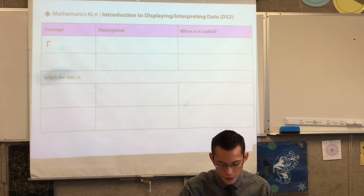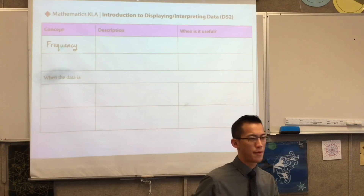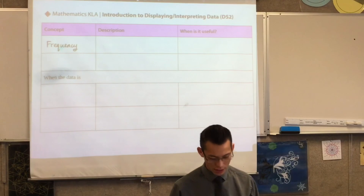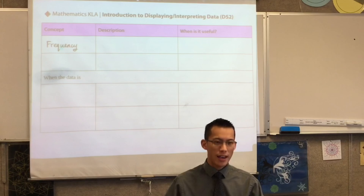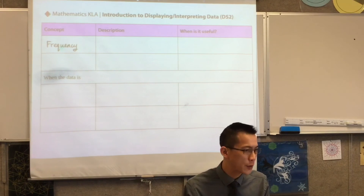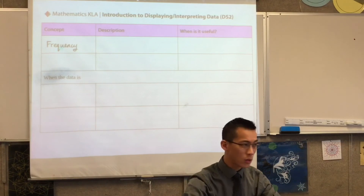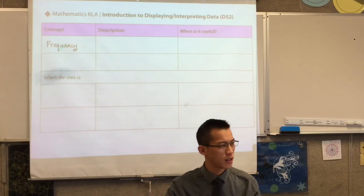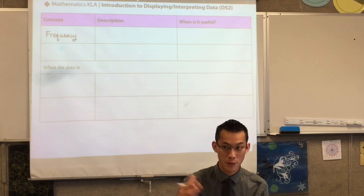The one idea that undergirds everything is what we call frequency. This is a word you've met before. You've done some statistics back in years 9 and 10, even in years 7 and 8. Frequency, as the name suggests, is about how frequently does something occur? So you've gone and got your sample, asked them all of your survey questions, and when you look at their answers, you want to get some patterns out of them.